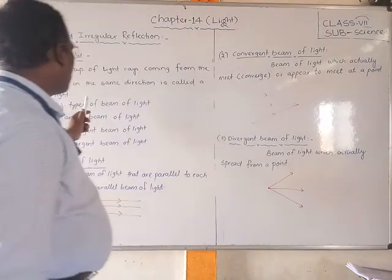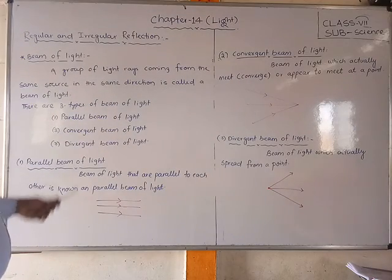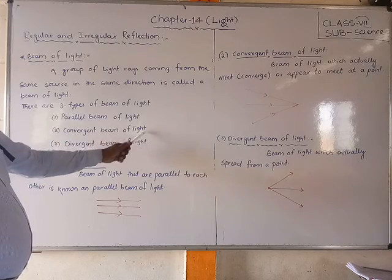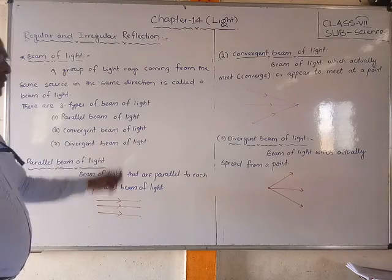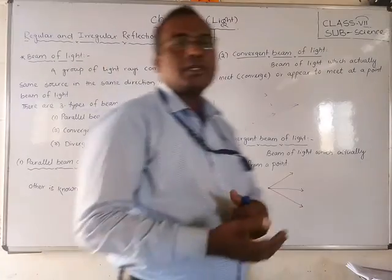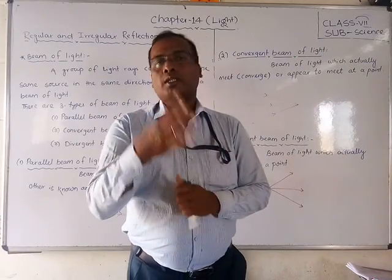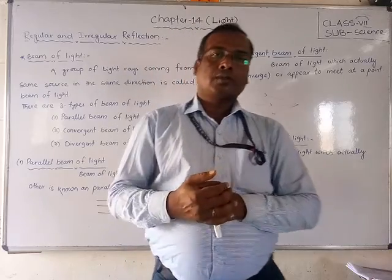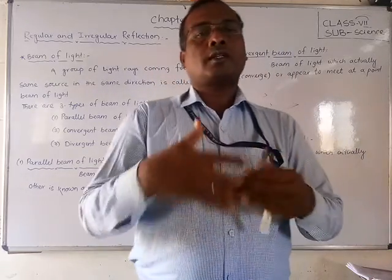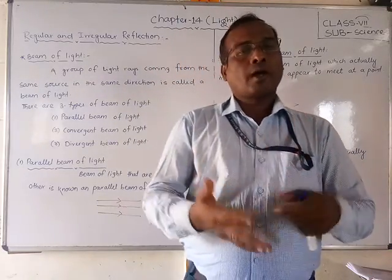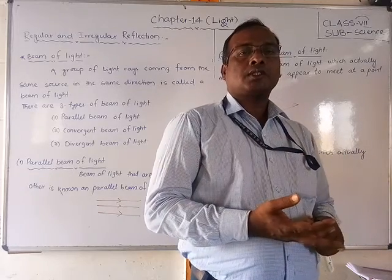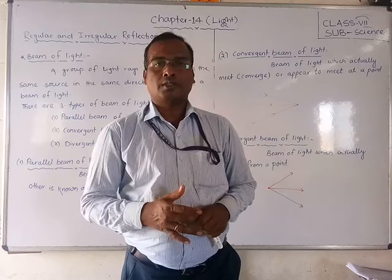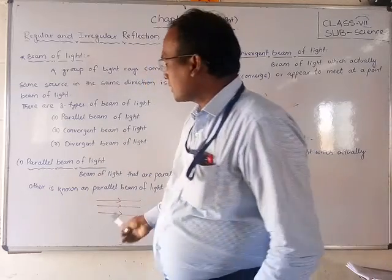This beam of light is generally of three types: the first one is parallel beam of light, the second one is convergent beam of light, and the third one is divergent beam of light. So there are three types of beams of light depending on how the rays travel from the source.